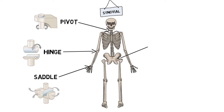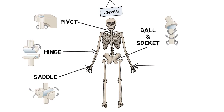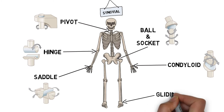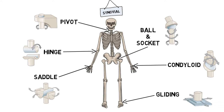Ball and socket joints are made up of a round end of one bone sitting into a cup-like area of another, allowing movement in almost all directions, such as our hips. Condyloid joints fit one bone into a cavity of another and only allow you to bend, straighten, and move side to side, such as in our wrists. Gliding joints have no axes of rotation and can only glide forward and back or side to side, such as in our ankles.